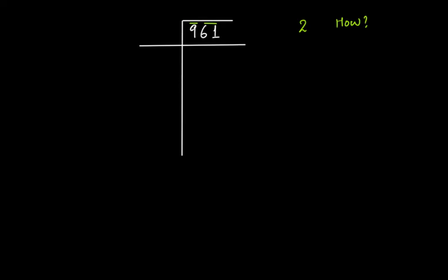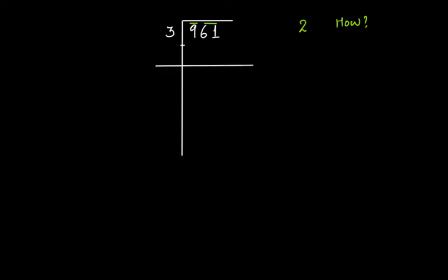Now think of a number whose square is either equal to 9 or less than 9. The first number that will come to your mind is 3. So 3 times 3 is 9. Subtract it and you get 0.